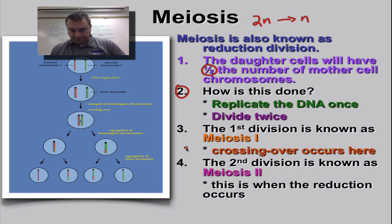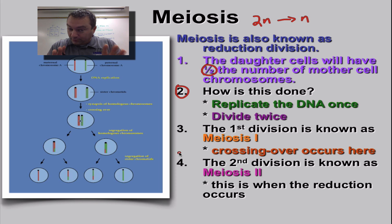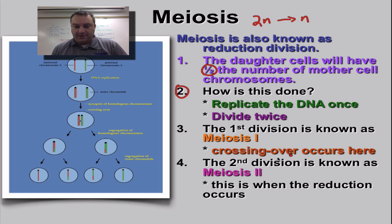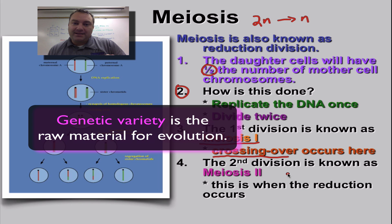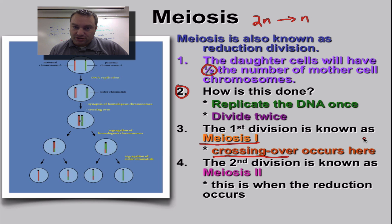Because we're doing two divisions, we're going to name each of those divisions a special name. The first division is called meiosis number one. Something really important happens in meiosis number one, and that's called crossing over. Crossing over is one of the ways that we greatly increase genetic variety. Genetic variety is the raw material for evolution. The second division is called meiosis number two, and this is when the reduction occurs.